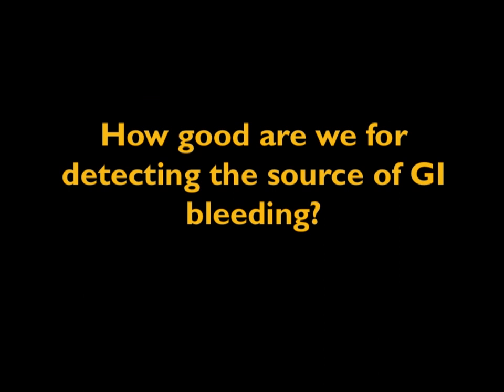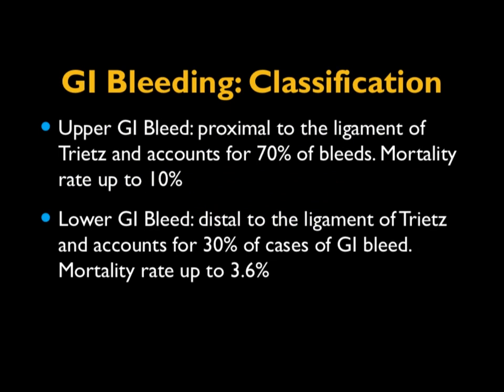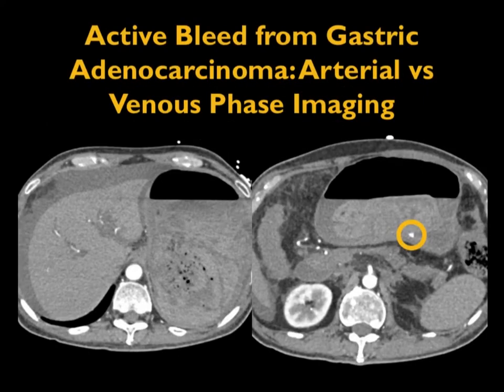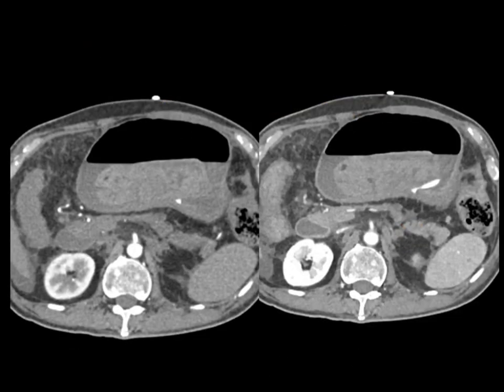GI bleeding is one of the areas where CT is very strong and being used more and more often. We classify GI bleeding as upper and lower, with the transition at the ligament of Treitz — 30% of cases are distal, 70% proximal. Most upper GI bleeding patients are sent to endoscopy, but CT can be very good: blood in the stomach, ascites, and a bright blush visible in the image. Going from arterial to venous phase, the site of bleeding becomes more active. We do dual-phase imaging because the venous phase is very helpful and may be the only phase to show the bleed.